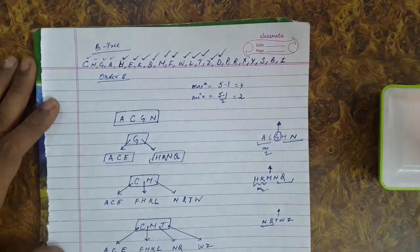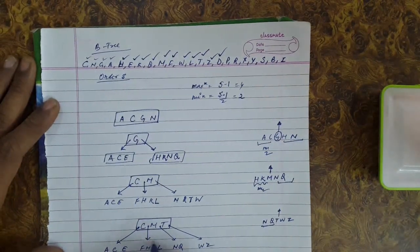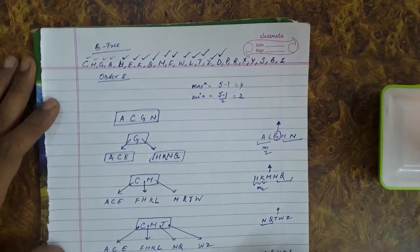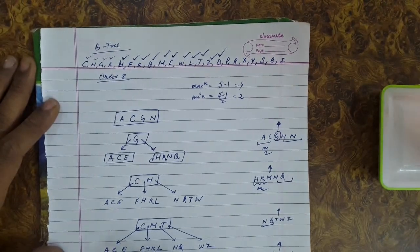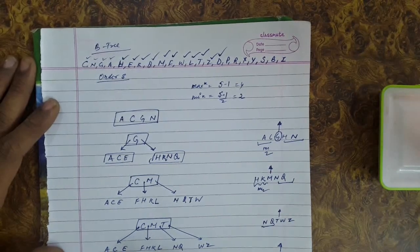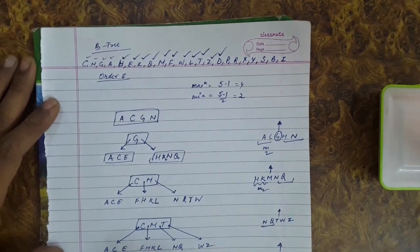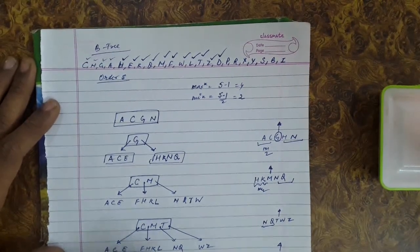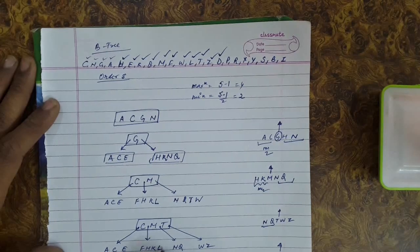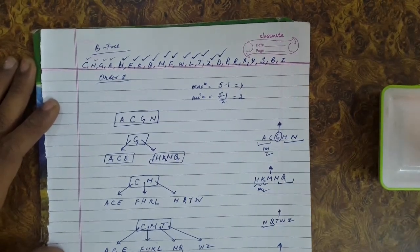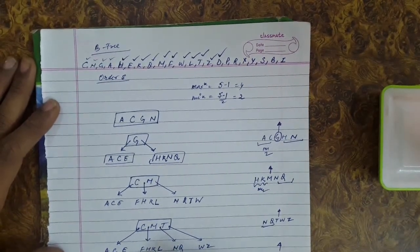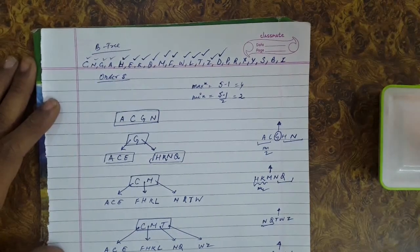The next key for insertion is D. Inserting D here violates the maximum condition: D, F, H, K, L — so H is sent upwards. Now C, H, M, and T are in the root node. A, C, E is one node; the split creates two nodes: D, F and K, L. The rest of the nodes remain the same.